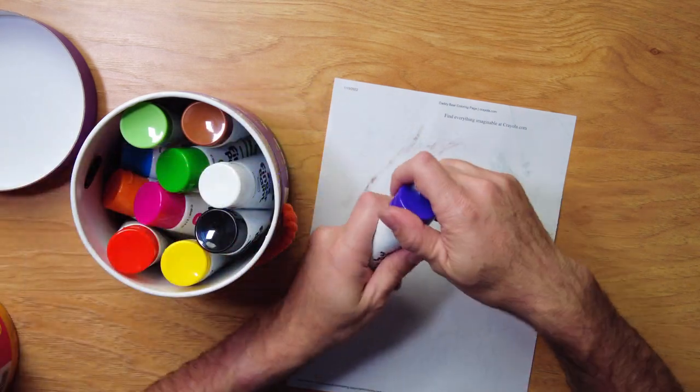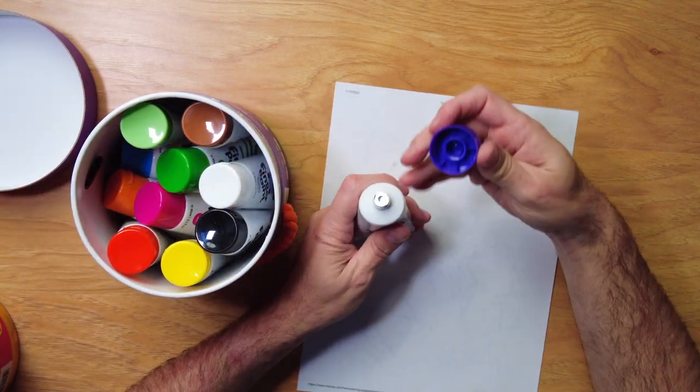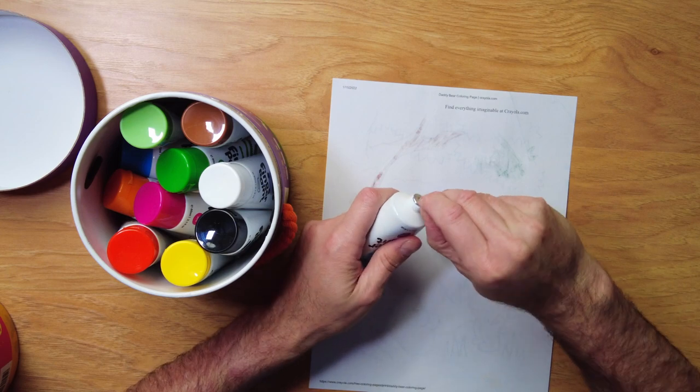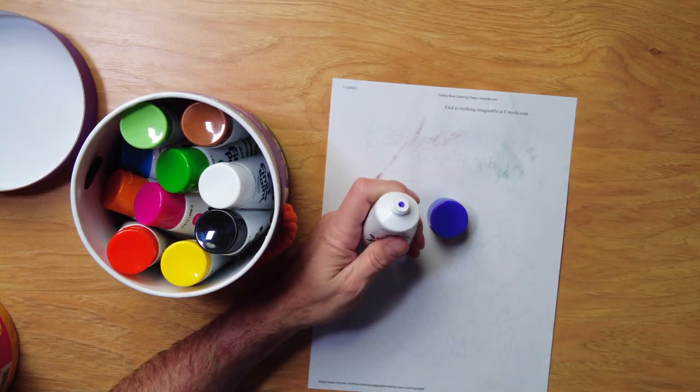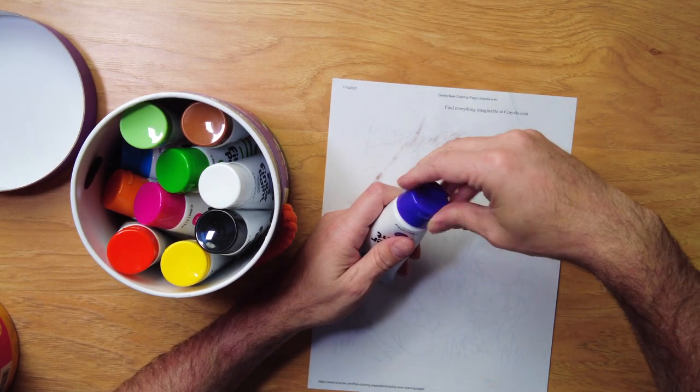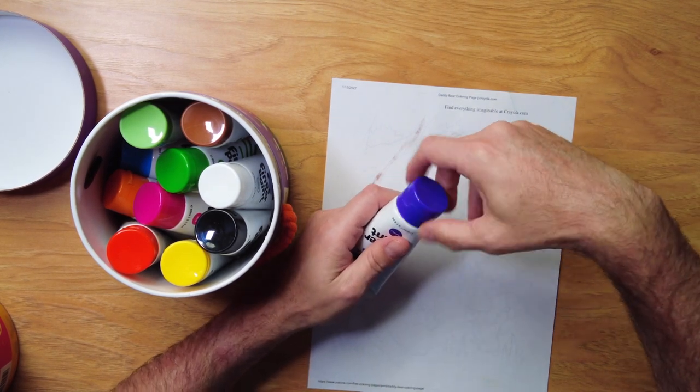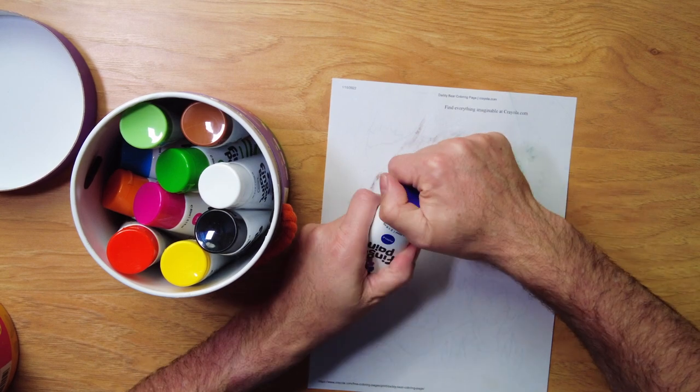When you first get them, they're actually sealed up. You need to open up the cap and take this little bit of foil off like that. It's not a big deal. You can put the cap back on, and this keeps it all fresh and good to go.